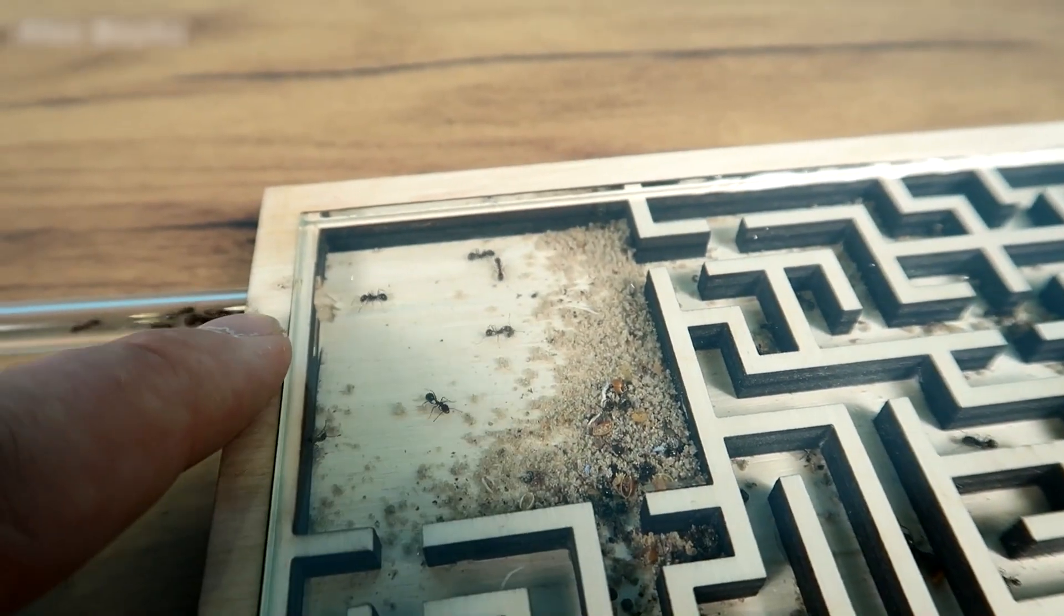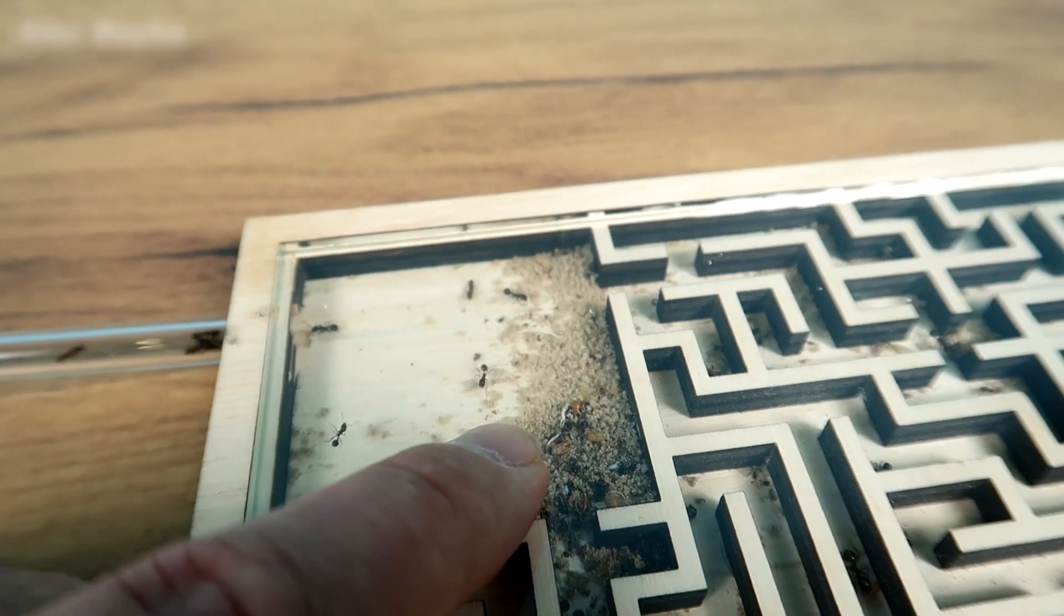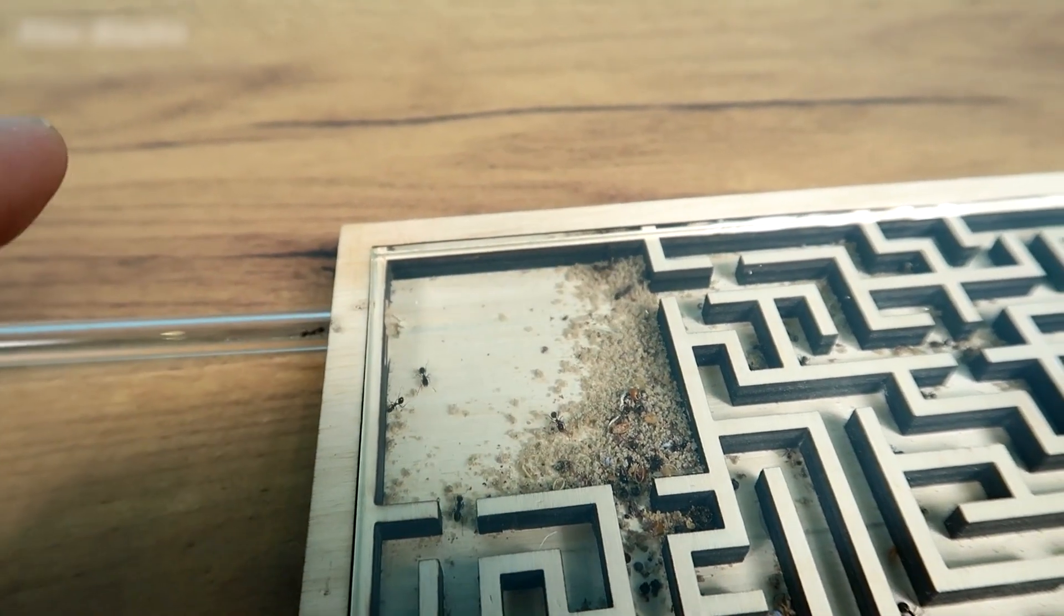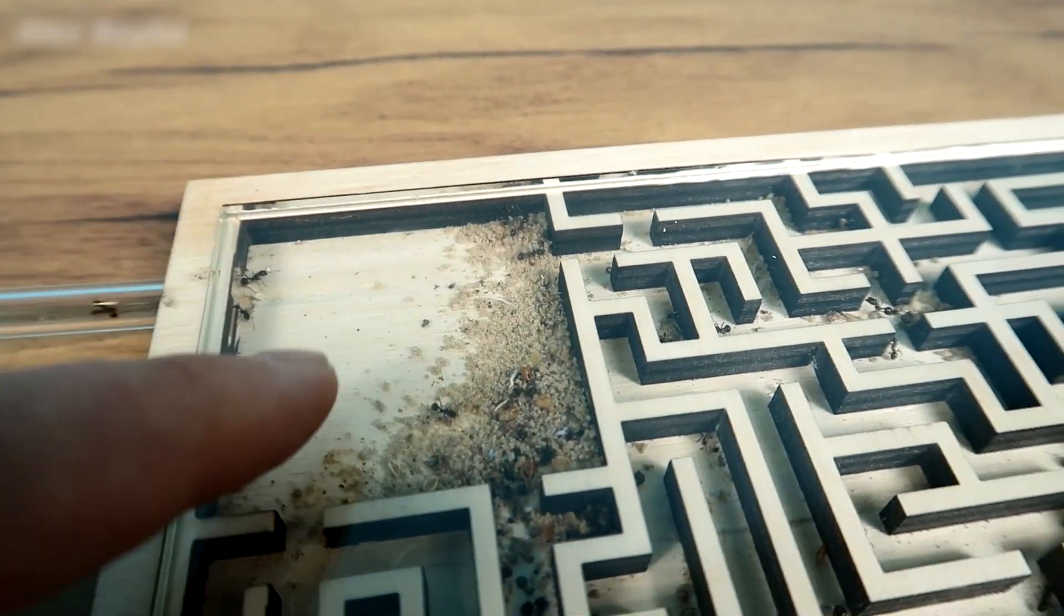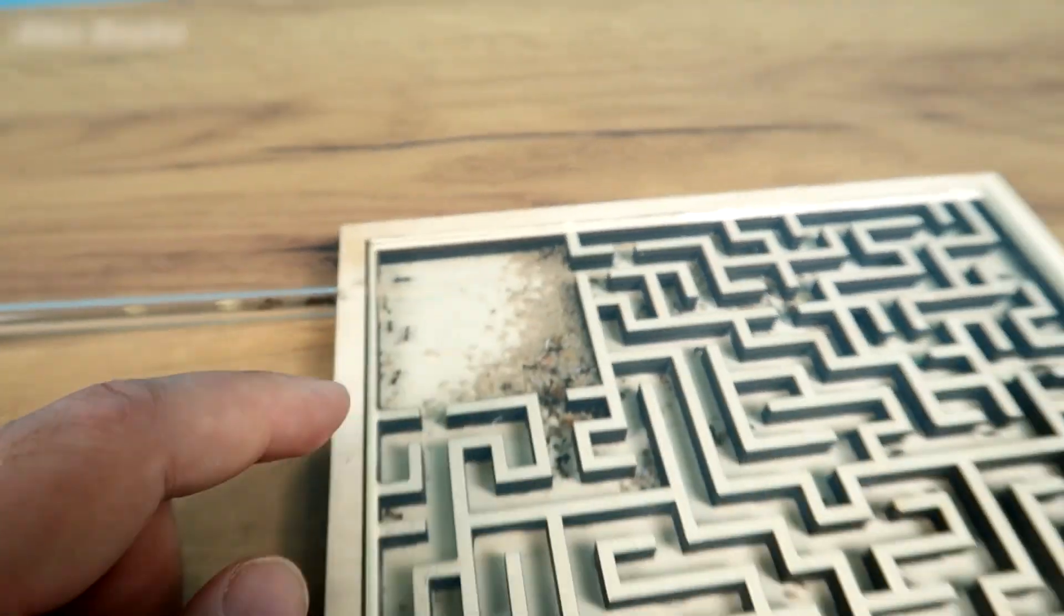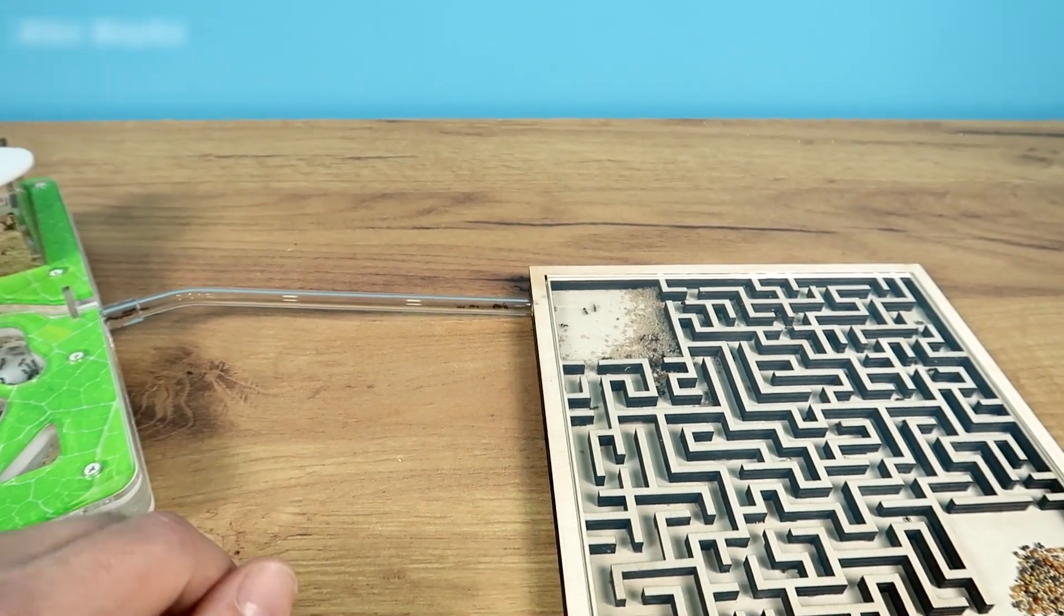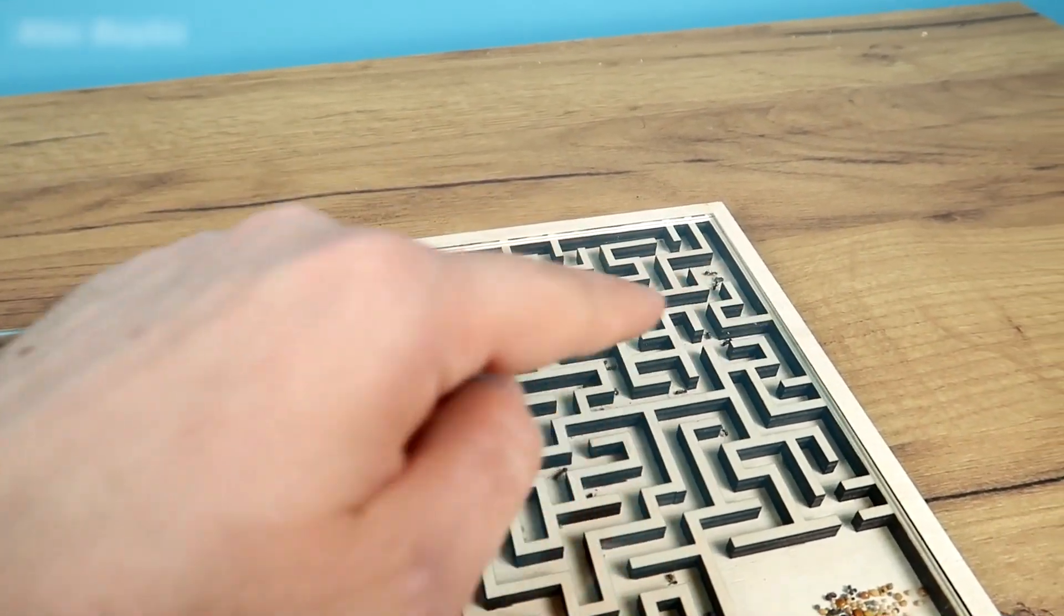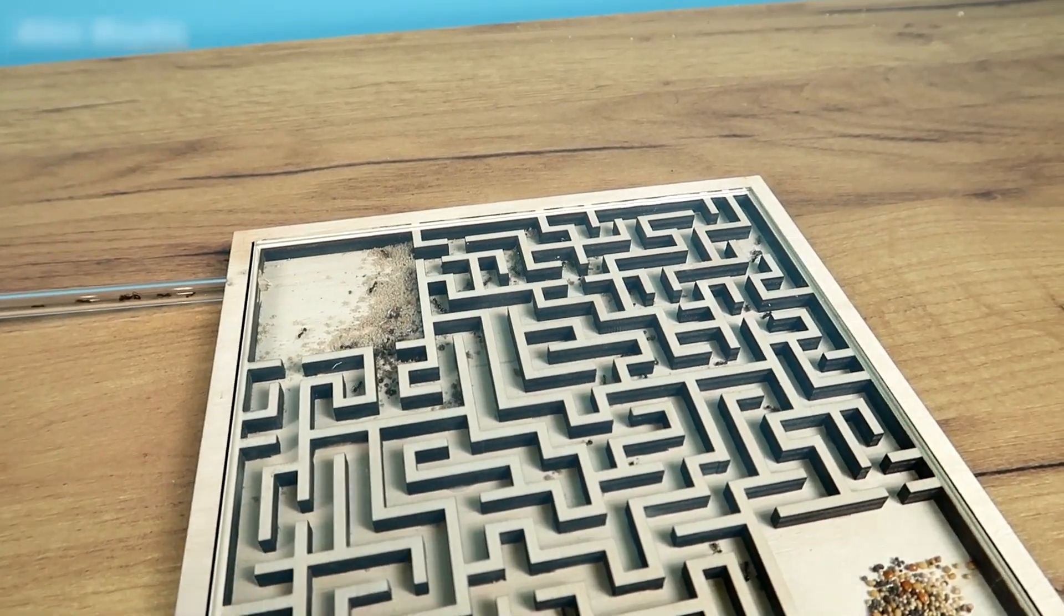In essence, these ants were found close to the exit. They may have not died here. They could have left at any time. Plus, they had access to water and food. These are the fallen ants, transported here by their fellow ants from the colony. The reason they scattered them throughout the maze remains a mystery.